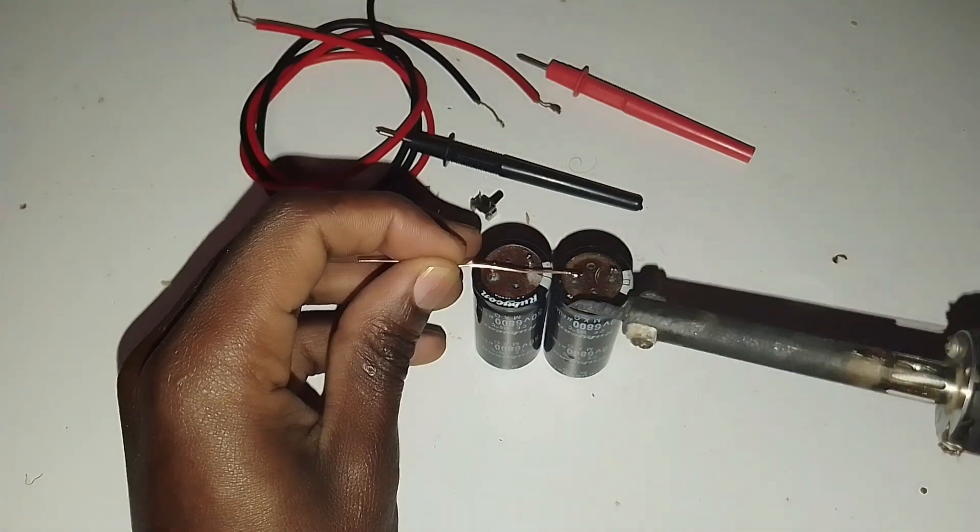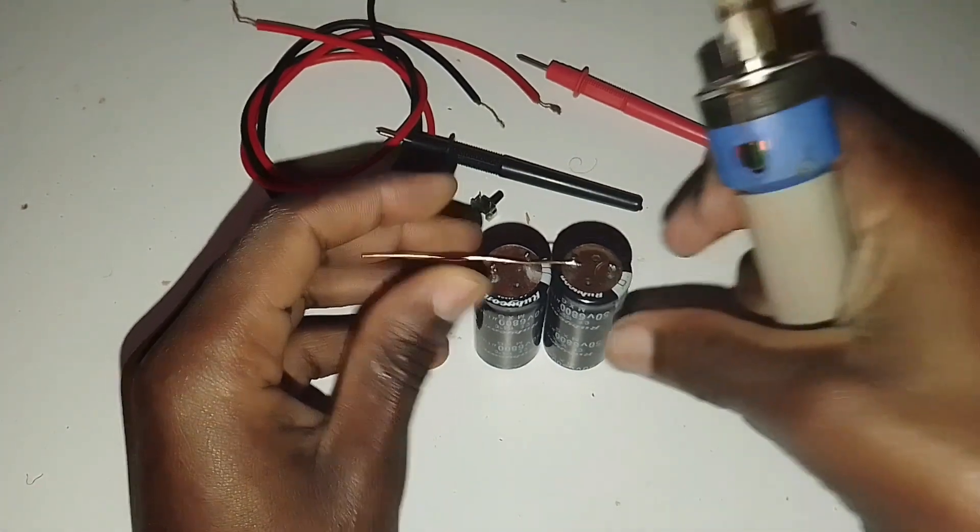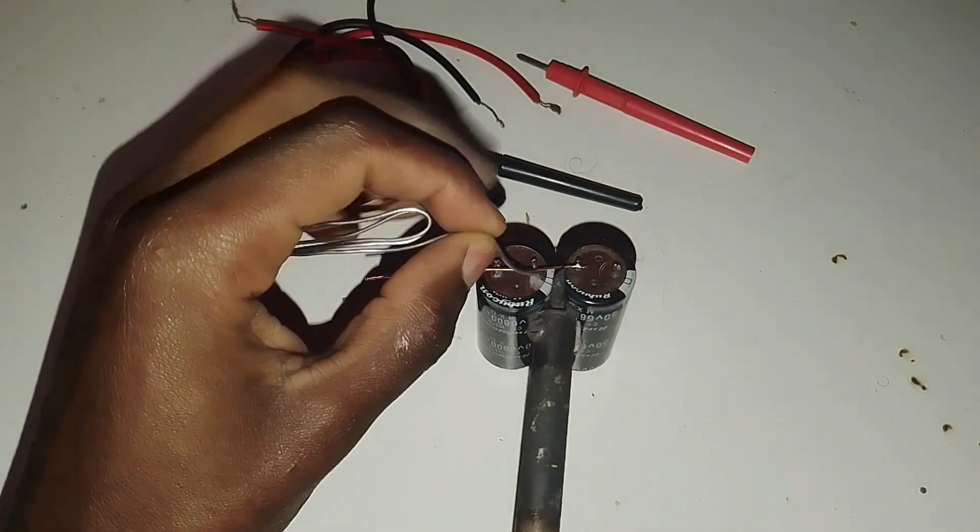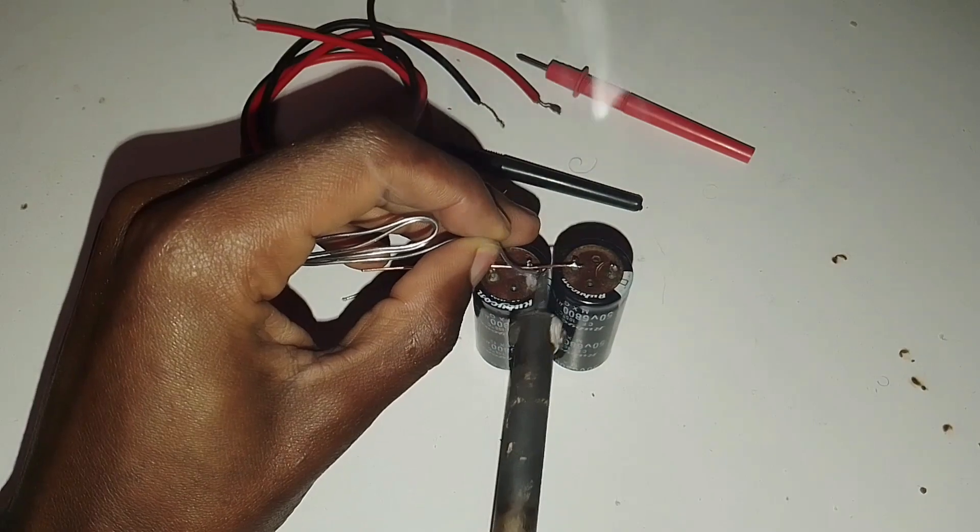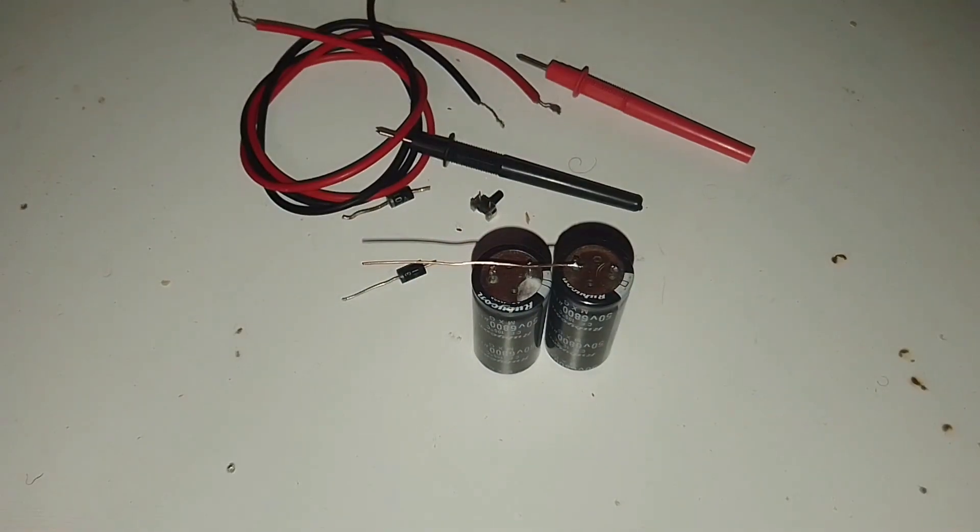What we want to do is to make a voltage multiplier so that we can have adequate voltage to make the spots. Here we have the series connection of those two capacitors.